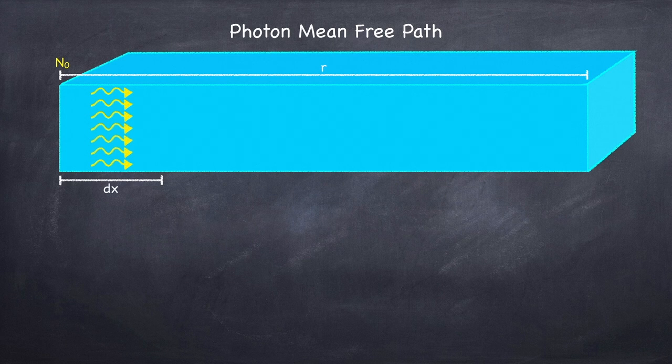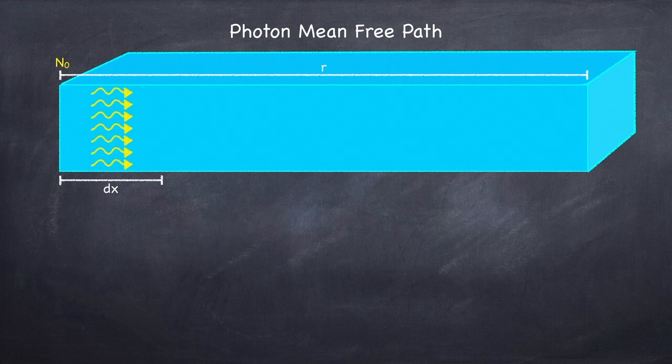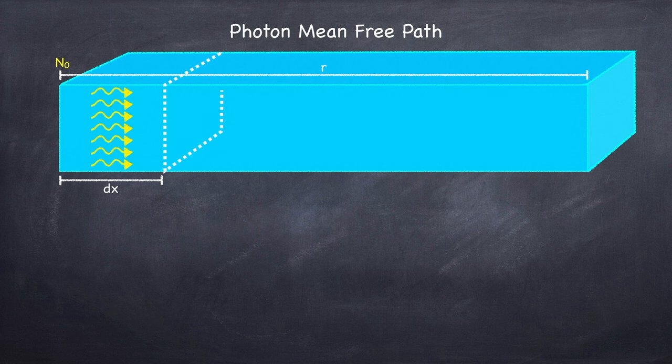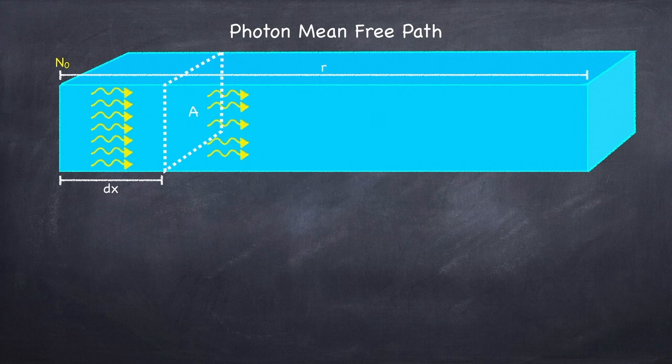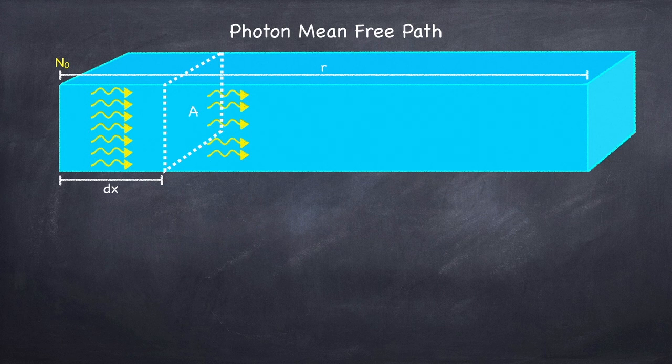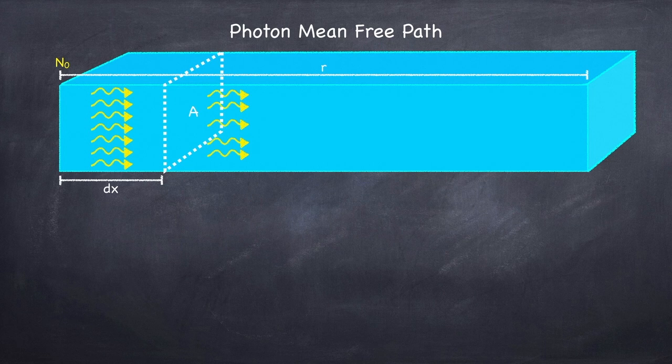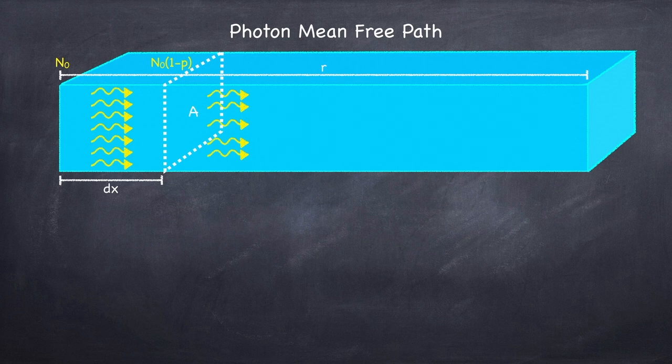Now let's ask, after a distance dx, how many photons remain, meaning how many photons have not scattered off of electrons. This is equivalent to asking, how many of the initial photons will pass through this cross-sectional area A after a distance dx? Let's say the probability of one photon passing through this cross-sectional area is p. Then the number of photons remaining will be the initial number times 1-p.